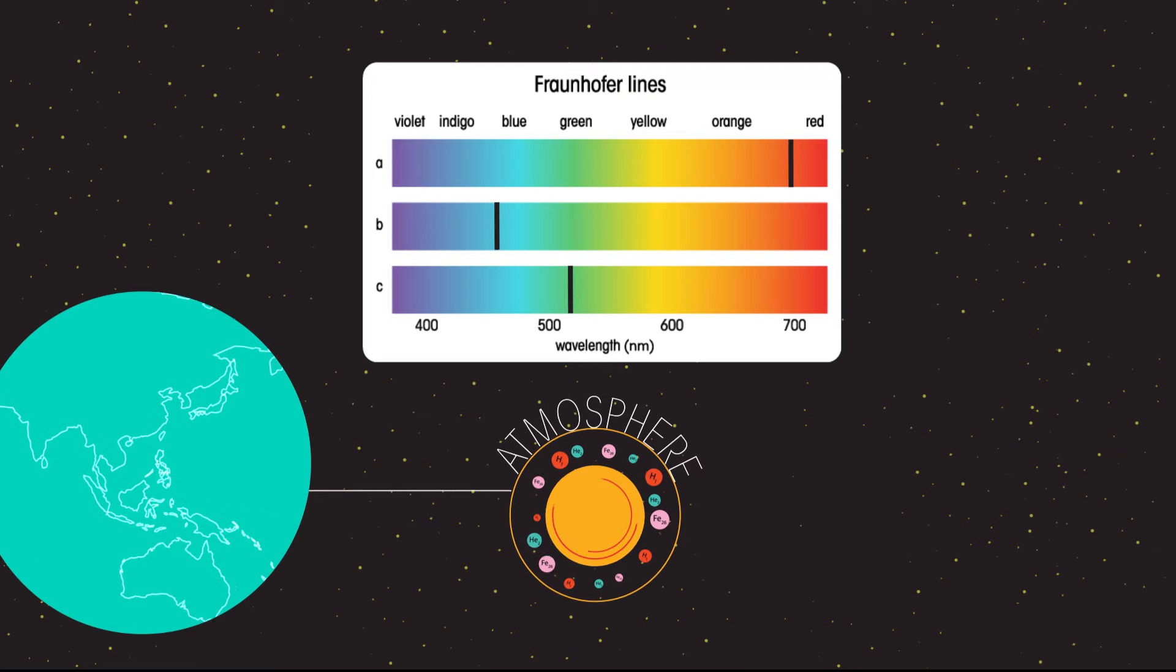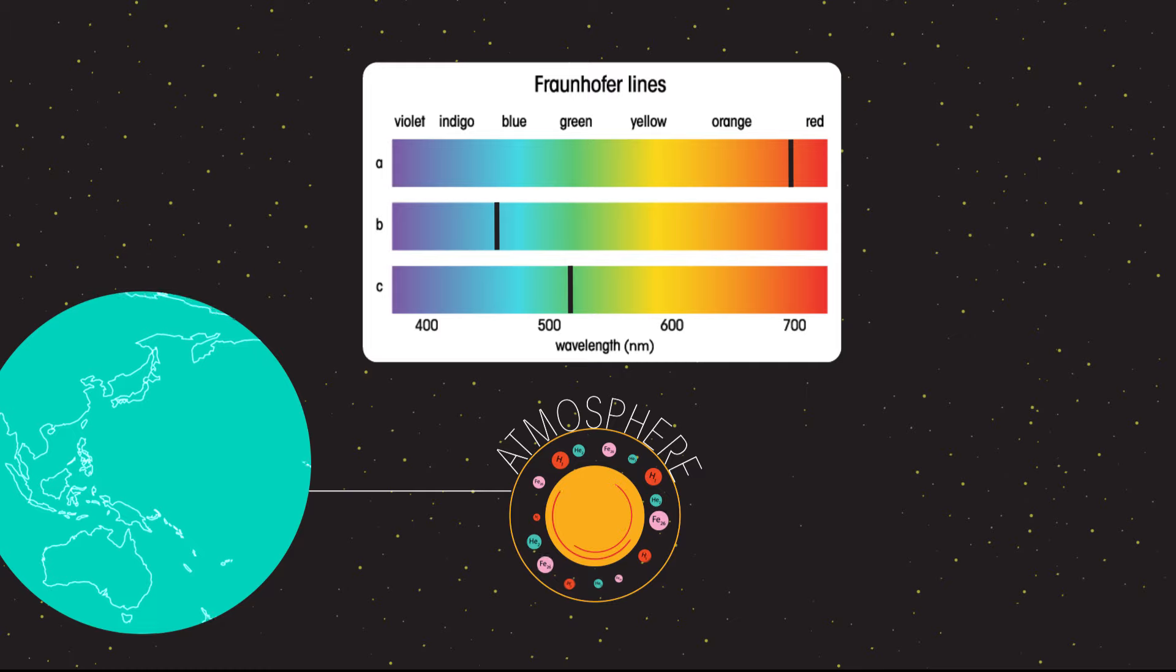The black lines show us where light is being absorbed. We can tell the exact wavelength of light being absorbed.